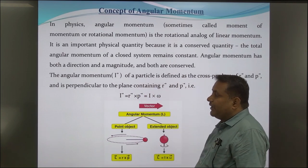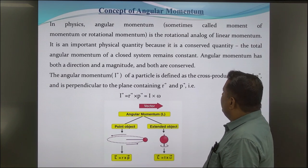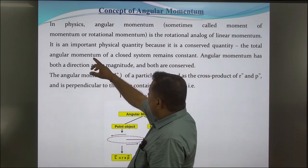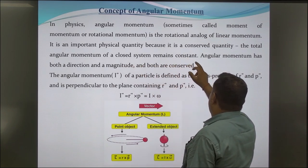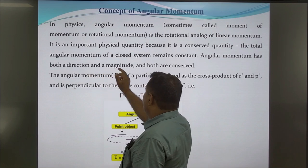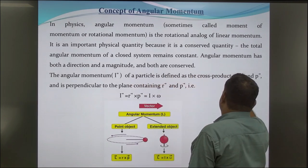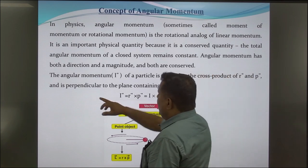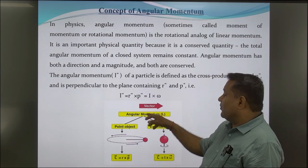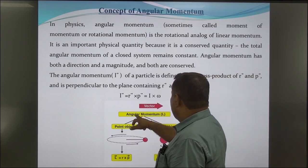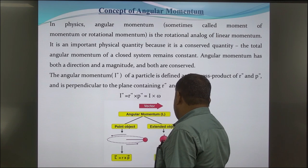Concept of angular momentum. In physics, angular momentum, sometimes called the momentum of rotation, is the rotational analog of linear momentum. It is an important physical quantity because it is a conserved quantity. The total angular momentum of a closed system remains constant. Angular momentum has both a direction and a magnitude, and both are conserved. The angular momentum L of a particle is defined as the cross product of position vector r and momentum p, and is perpendicular to the plane containing r and p. That is, L = r × p = I × ω. For a point object, L = r × p; for an extended object, L = I × ω.